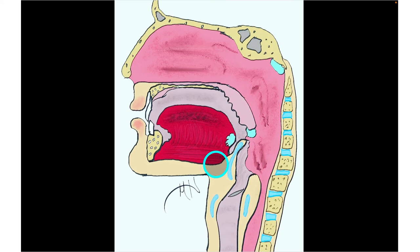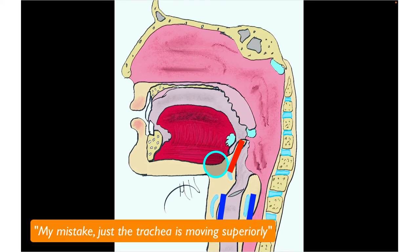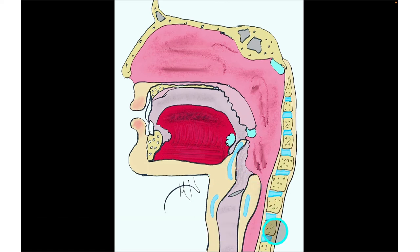Normally the trachea and larynx are in a certain orientation, but during swallowing the larynx and trachea move superiorly while the epiglottis moves inferiorly, blocking the glottis — the opening to the trachea. The esophagus is posterior to the trachea; in this image, anterior is to the left and posterior is to the right.